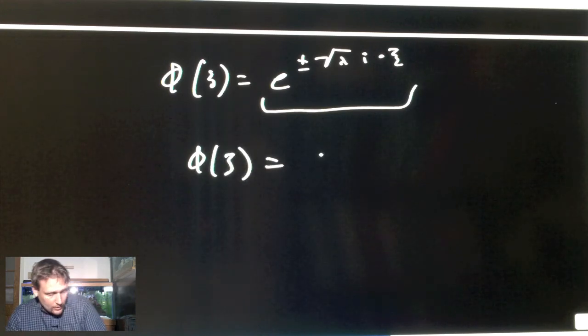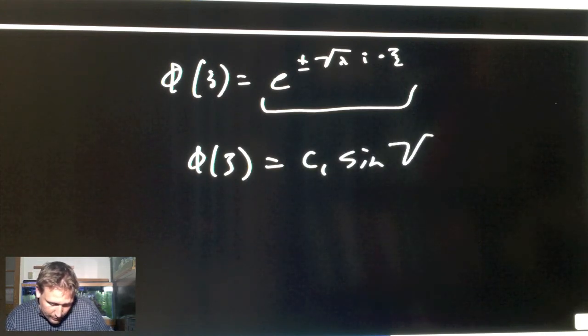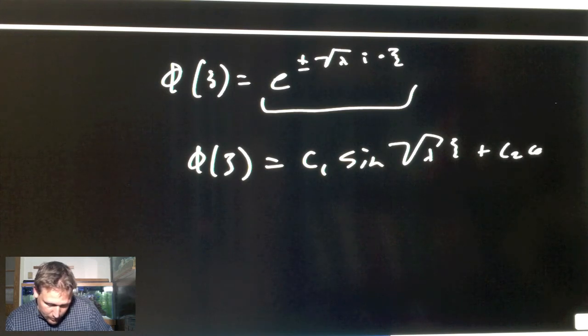So what you end up with though in the end is that φ of ψ equals c₁ sine square root λ ψ plus c₂ cosine square root λ ψ.